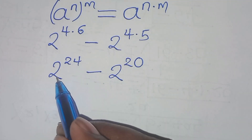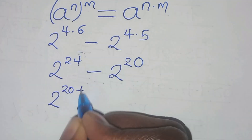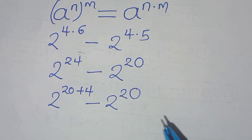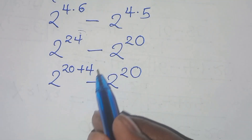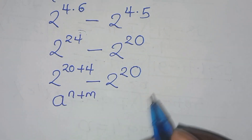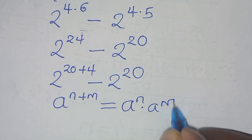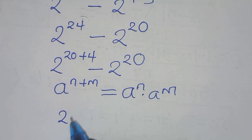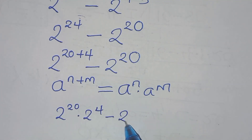We can express 2 to the power 24 as 2 to the power 20 plus 4, then subtract 2 to the power 20. Now, 2 to the power 20 plus 4 is in the form of a to the power n plus m, which we can express as a to the power n times a to the power m. Applying this exponent property, we get 2 to the power 20 times 2 to the power 4, minus 2 to the power 20.